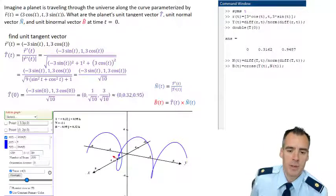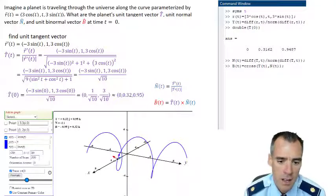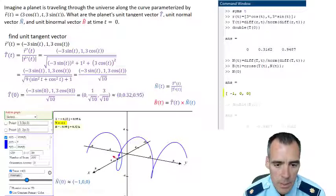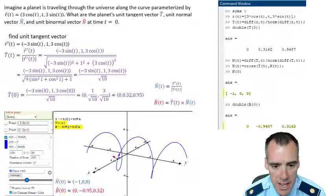Stealing it from CalcPlot 3D, we end up with our unit normal vector being the vector negative 1, 0, 0. It's pretty simple. And we get our binormal unit vector being 0, negative 0.95, and 0.32.